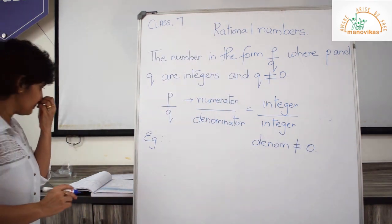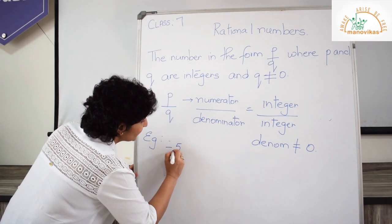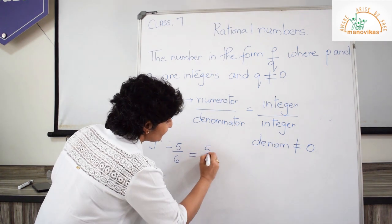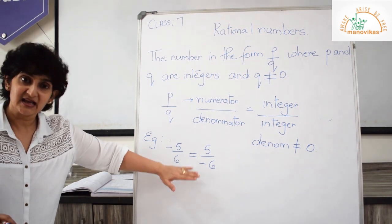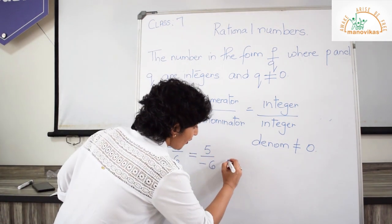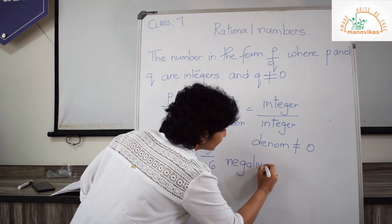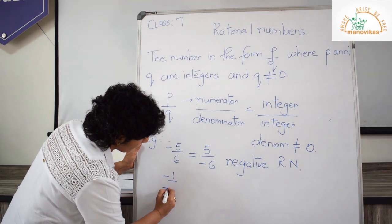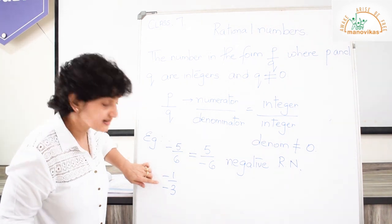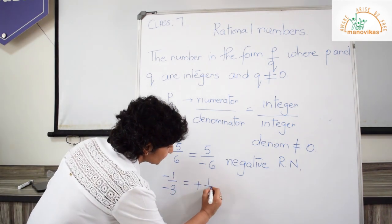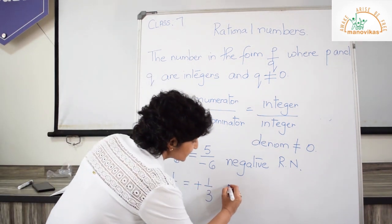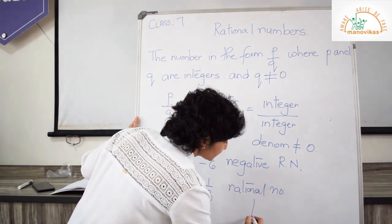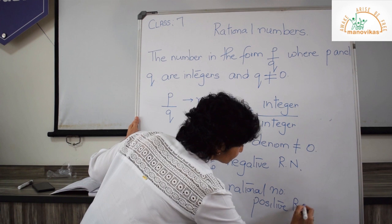The first example: if we take minus 5 upon 6, remember minus 5 upon 6 is also equal to 5 upon minus 6. This is a rational number. It is also called a negative rational number. If I take minus 1 upon minus 3, you know minus and minus gives me plus, so this is plus 1 upon 3. This is also a rational number — a positive rational number.